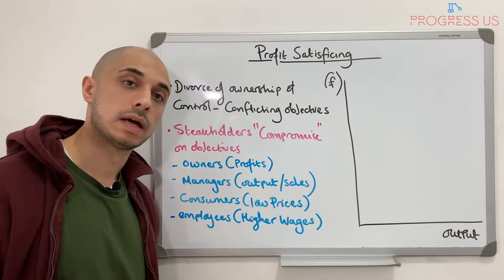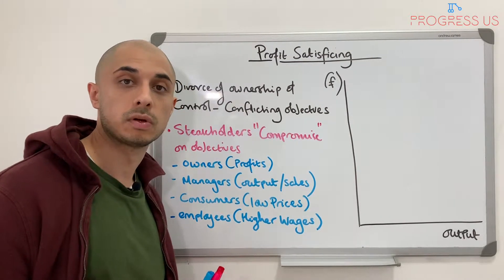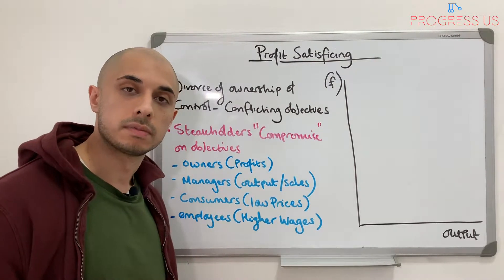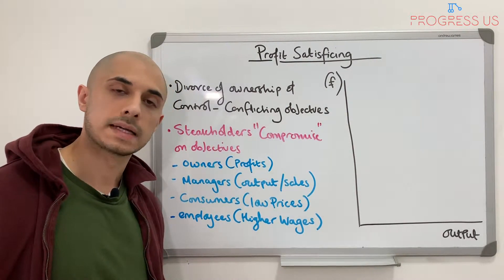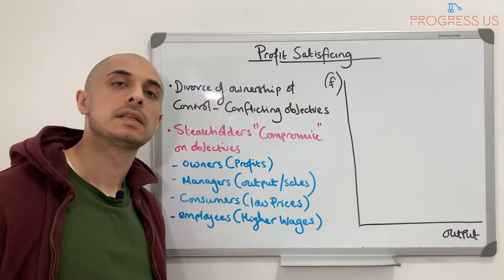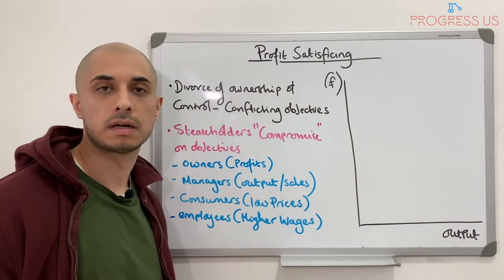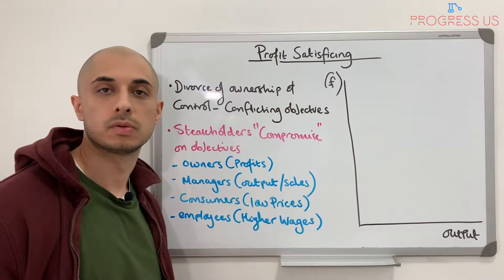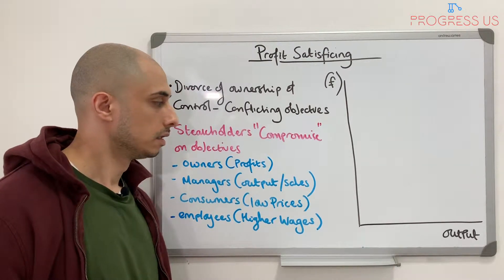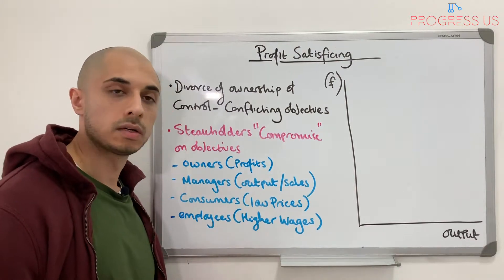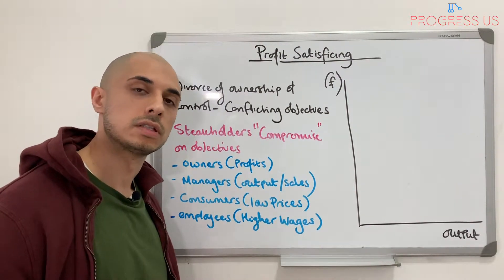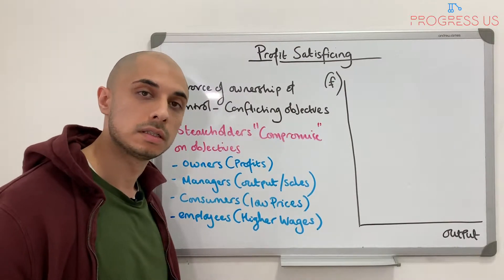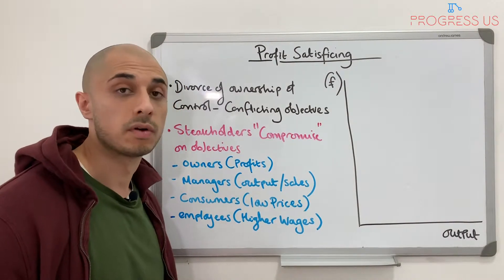Consumers look to have low prices to maximise their benefit, and employees who work for the company look to maximise their wages or any type of benefits they may receive — fringe benefits like company cars, a laptop, or access to gyms or creches for their children. So these four stakeholders, among many more, look to maximise their benefits and utility in order to increase their own welfare.